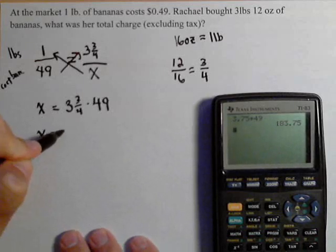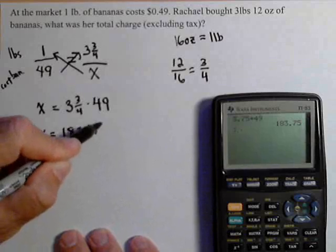And there's our total cost. So, x equals 183.75.